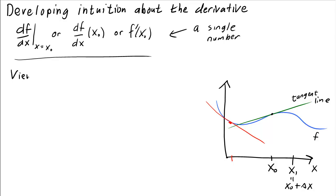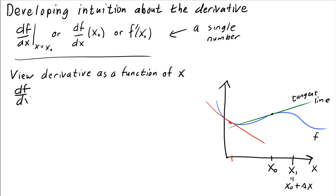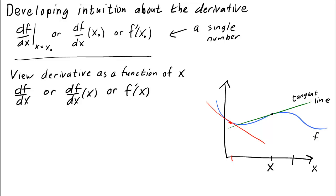Sometimes we want to view the derivative as a function. Then we'll usually write it as a function of just x rather than x0. We might write it as df/dx, or df/dx of x, or using the prime notation as f prime of x. Here we're thinking of evaluating the slope at the value x and looking at how the slope changes as you make x larger or smaller. For each value of x you get a single number — that slope — but of course that slope changes as you change x.